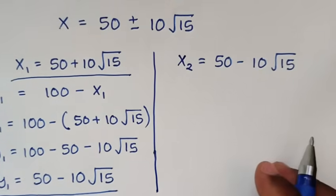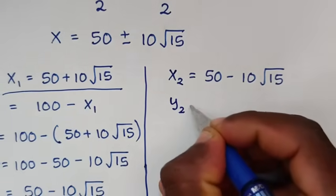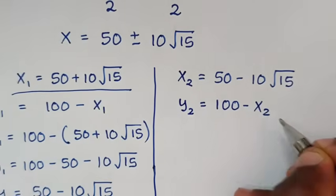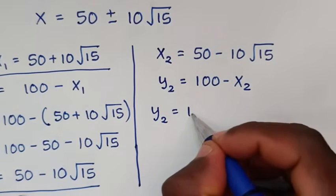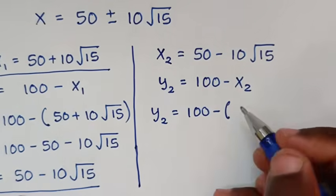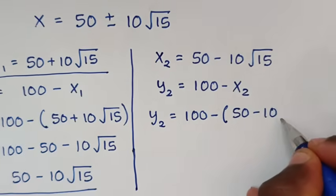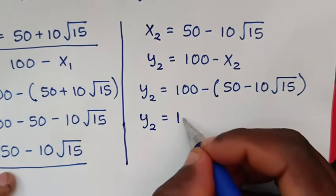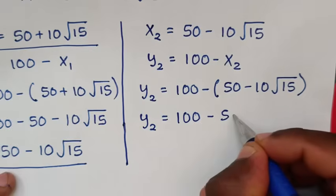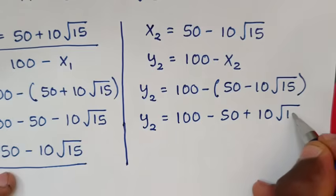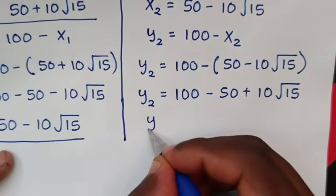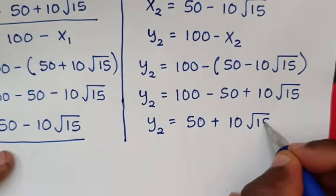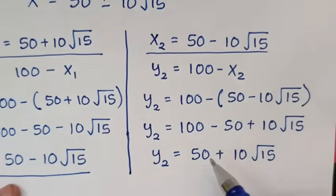For the second solution: y2 equals 100 minus x2, which is 100 minus bracket 50 minus 10 square root of 15 bracket. Taking the negative inside: y2 equals 100 minus 50 plus 10 square root of 15, so y2 equals 50 plus 10 square root of 15.